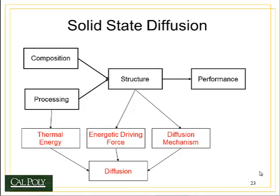This is part four of topic four on electrical behavior and diffusion. In this part of the notes, we'll be talking about solid state diffusion, what it requires to happen, and what it is exactly. We're talking about the diffusion mechanism — the way in which atoms move through other solid materials.